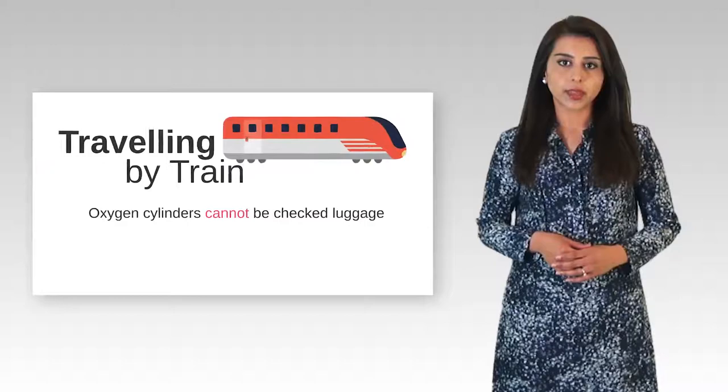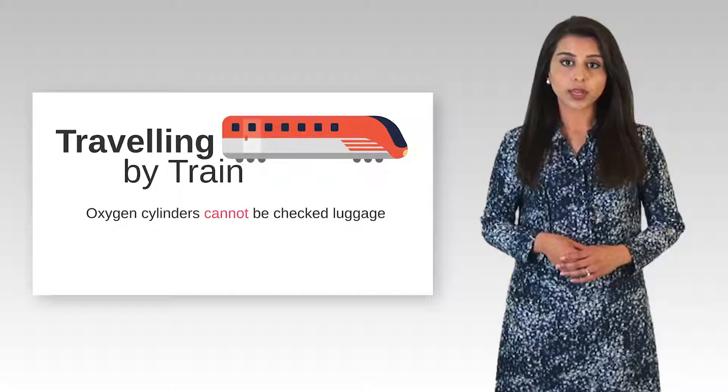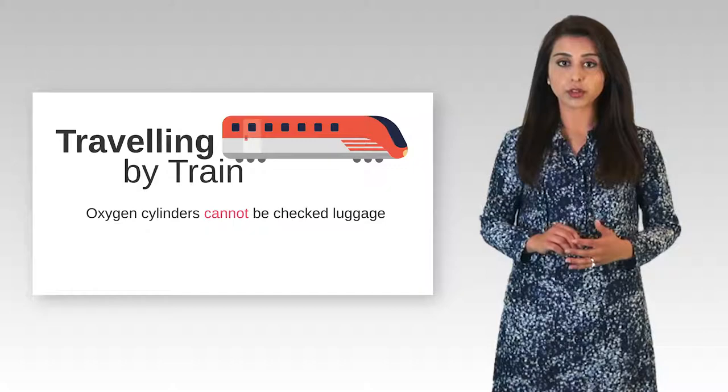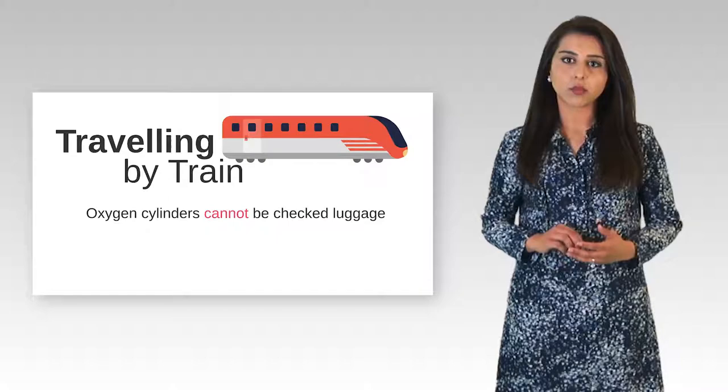If you are travelling by train, remember that an oxygen cylinder cannot be a part of your checked luggage. Most train lines will require that you give notice in advance to travel. There may be some restrictions that you need to take note of. For oxygen cylinders, there may be a weight limit in place on the train. So when travelling by train with an oxygen cylinder, document the size, weight and model.